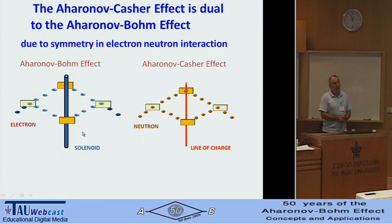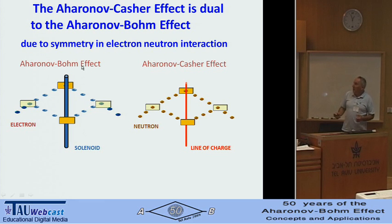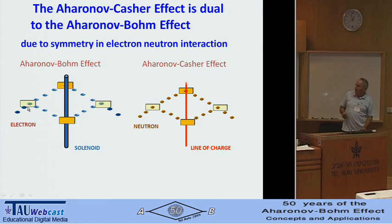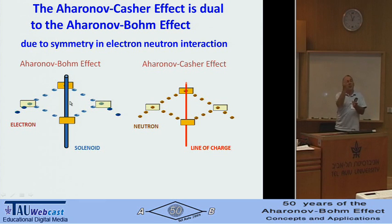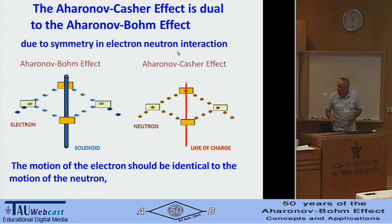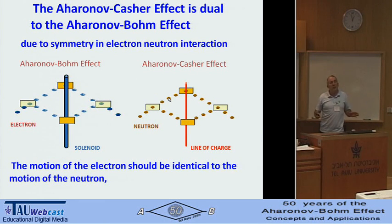Other paradoxes involve the duality between the Aharonov-Bohm and Aharonov-Casher effects. We have a symmetry of interaction between a neutron with spin pointed in the z-direction and an electron. If we consider the Aharonov-Bohm setup in a Mach-Zehnder interferometer, with the solenoid made of many neutrons pointed up, and then exchange neutron for electron and electron for neutron, the symmetry of interaction tells us the motion of the electron in the first case should be the same as the motion of the neutron in the second.